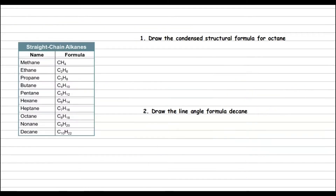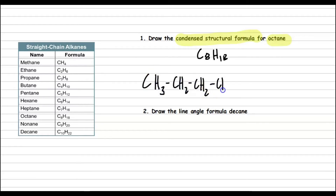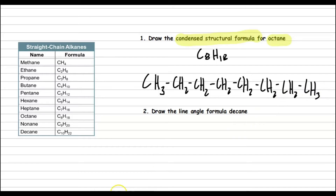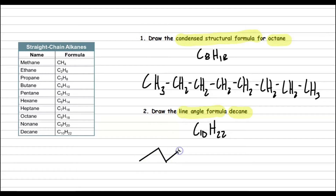Let's try a few more examples. Draw the condensed structural formula for octane. The molecular formula for octane is C8H18, and so the condensed structural formula will look like this. How about this: draw the line-angle formula for decane. Decane has a molecular formula of C10H22, so there will be 10 carbons, and the line-angle formula will look like this.